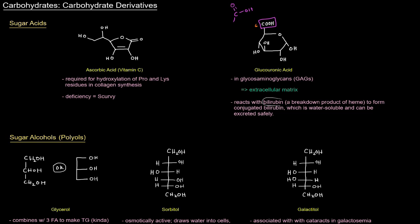Bilirubin is originally, until it conjugates with glucouronic acid, is not water soluble. So glucouronic acid allows it to be excreted safely because bilirubin, if it builds up, is toxic.